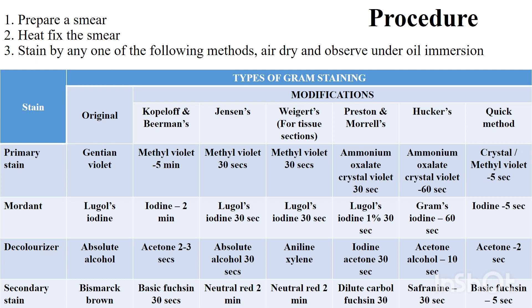The third step is decolorization, using alcohols or acetone, or a combination of both, which is a lipid solvent. This digests the lipid in the Gram-negative cell wall and allows the CV-I complex — that is, the crystal violet–iodine complex — or methyl violet–iodine complex to wash out.